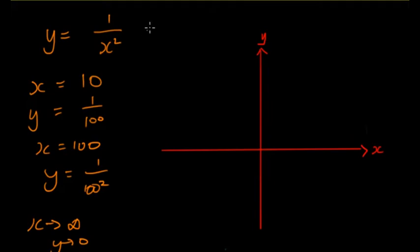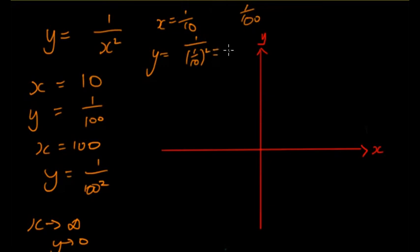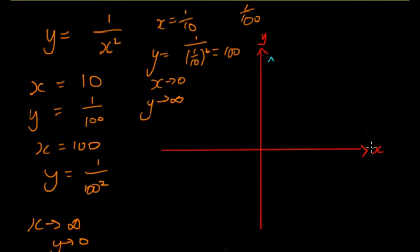What happens when x = 1/10? Then y = 1 over (1/10)², and (1/10)² = 1/100, so 1 over 1/100 = 100. So when x approaches 0, y approaches infinity. This is very similar to 1/x, but because it's squared it's going to be a lot steeper.